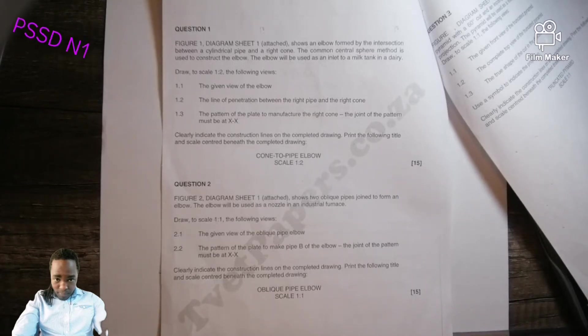So scale 1 is to 1 means it's a reduction scale. 1.1, draw the given view of the elbow. 1.2, the line of penetration between the right pipe and the right cone.